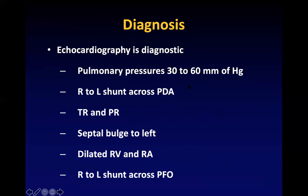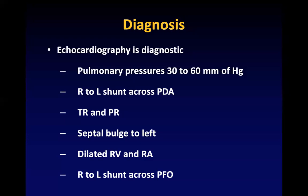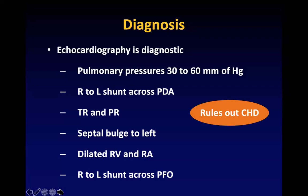Echocardiography is the gold standard. Pulmonary pressures in echo: less than 30 mmHg is normal, 30 to 60 is mild to moderate, more than 60 is severe. There can be a right-to-left shunt across the duct, tricuspid regurgitation, and pulmonary regurgitation due to increased pulmonary pressures. Because right-side pressures have increased there is a septal bulge towards the left side, right atrium and right ventricle are dilated, and there can also be right-to-left shunt across the PFO. Echo is also important to rule out congenital heart disease — the most common masquerade of PPHN is TAPVC.